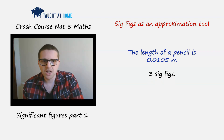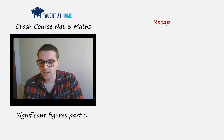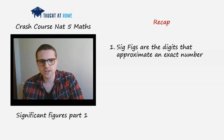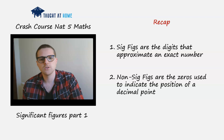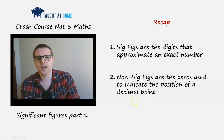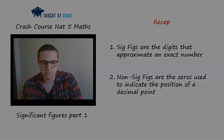Let's recap. Significant figures are the digits that approximate an exact number — and approximation is the key idea. Non-significant figures are the zeros used to indicate the position of the decimal point.